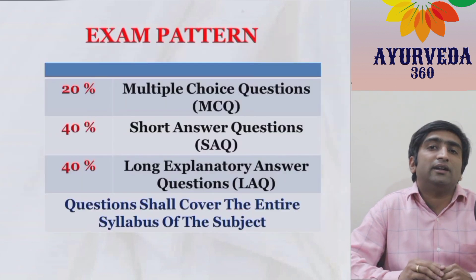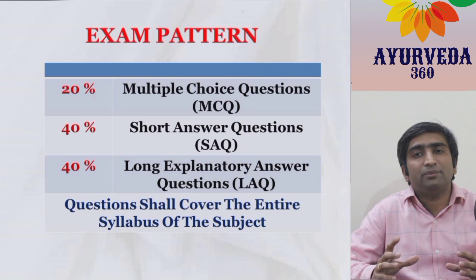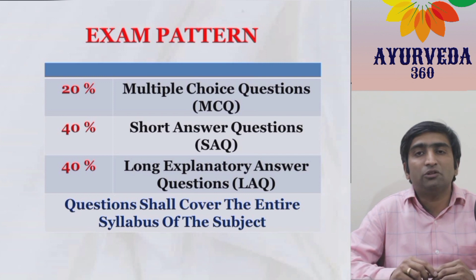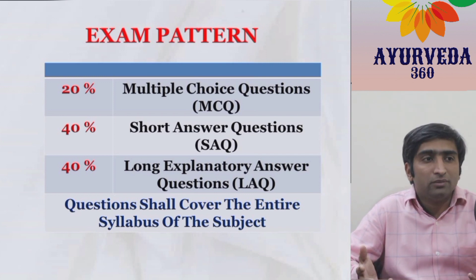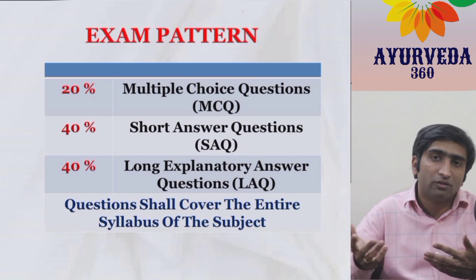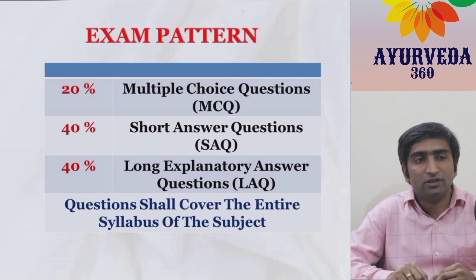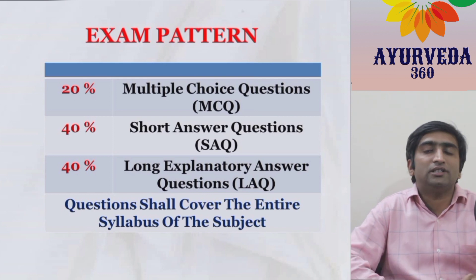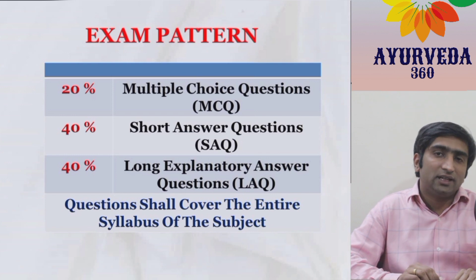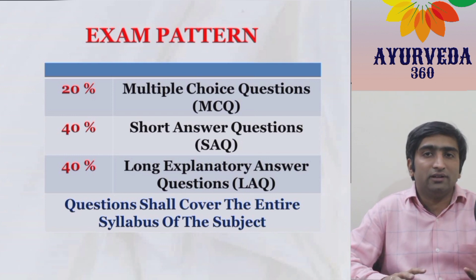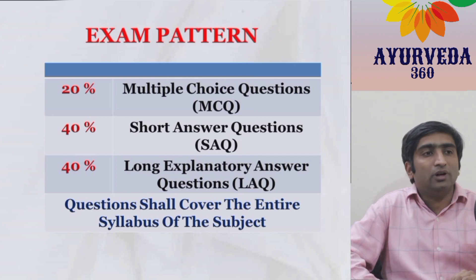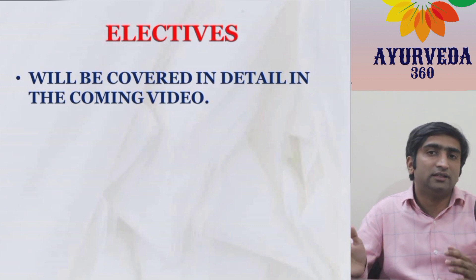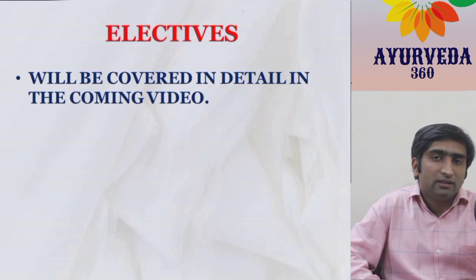Regarding the question paper format: 20% of the questions will be MCQ-based, 40% will be short-answer based, and 40% will be long-answer based. The university is free to decide how to frame short answers — whether two, three, four, or five marks — but ultimately 40% should be short answers. Long answers may be 10 or 12 mark questions depending on the university, but ultimately 40% should be long-answer type. The entire subject should be covered in these questions. Elective marks of 30, 30, and 30 per year will be dealt with in detail in coming videos.